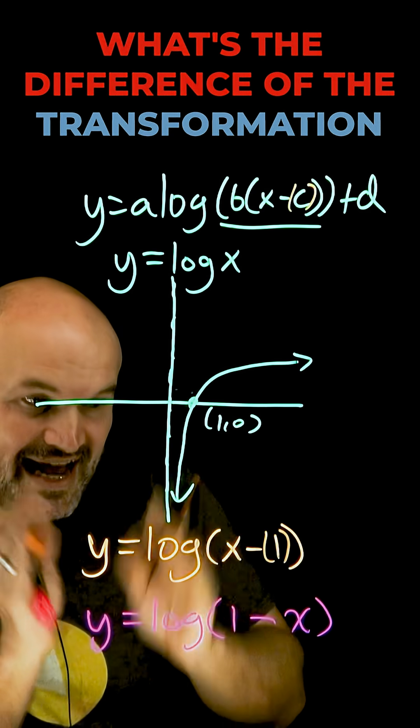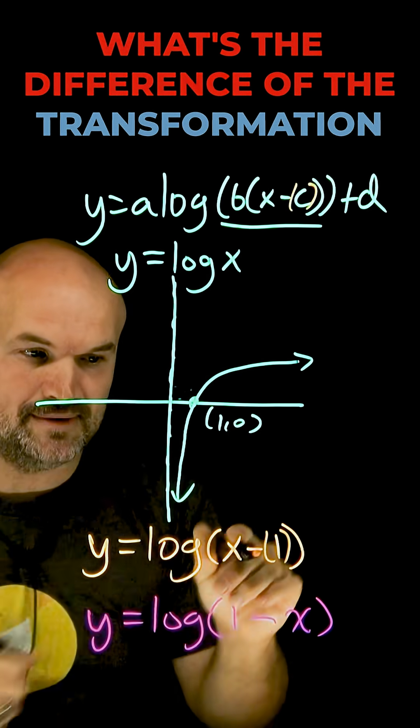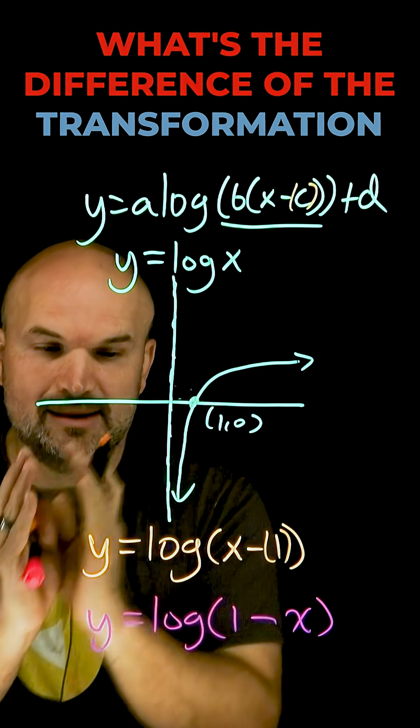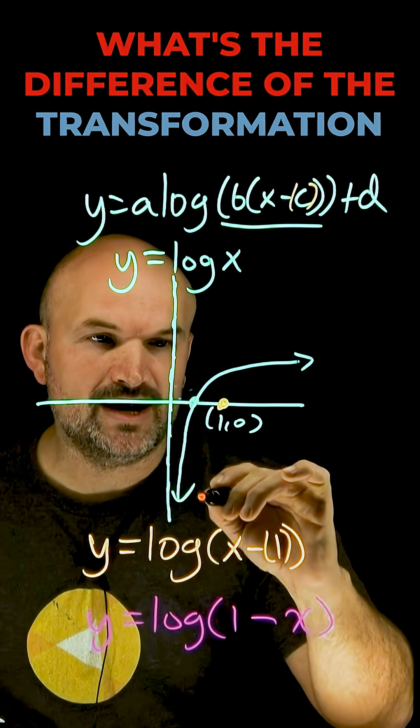So if I put a parenthesis around this x minus c and it's in that formation x minus 1, you can see actually c is equal to 1. So I'm actually going to be shifting the graph one unit to the right.